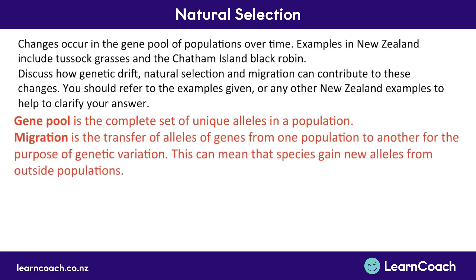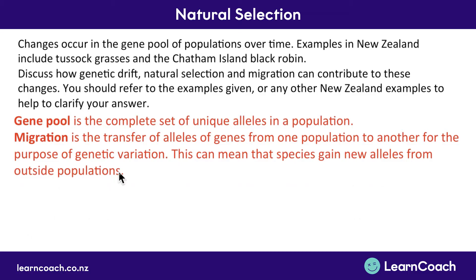Finally, looking at migration: migration can mean a species gains new alleles from an outside population. However, when we consider the Chatham Islands and the black robin, migration had very little effect because the Chatham Islands are so isolated. Other birds — particularly other robins — can't migrate and breed with the Chatham Island black robin, so they don't share alleles, and it's unlikely that migration would have had a significant effect on the gene pool.